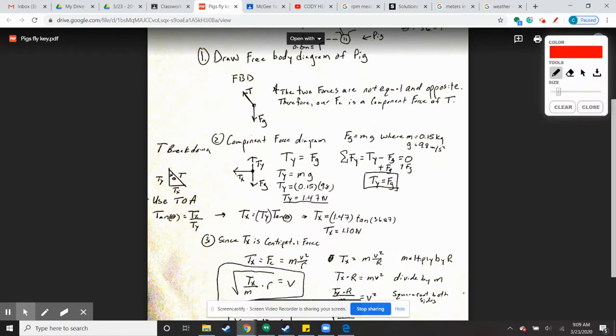So we have tension and we have Fg. Tension and force of gravity are not equal and opposite. Therefore, you have some component forces for tension.